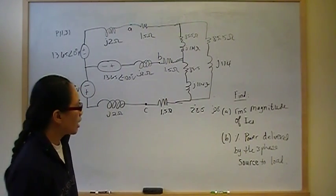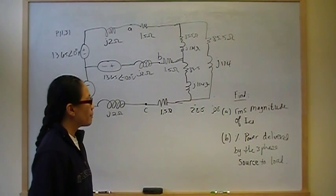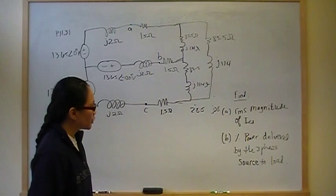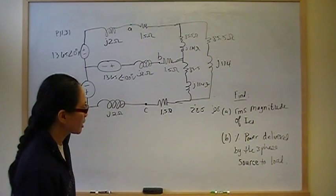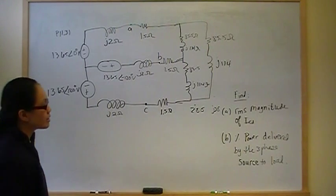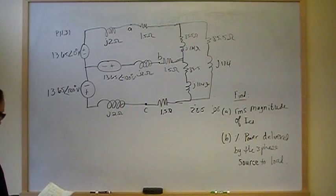And then part B, power delivered. You just calculate the power delivered to the load and then divide it by the complex power. And that gives you the percent power delivered by the three-phase source to the load.